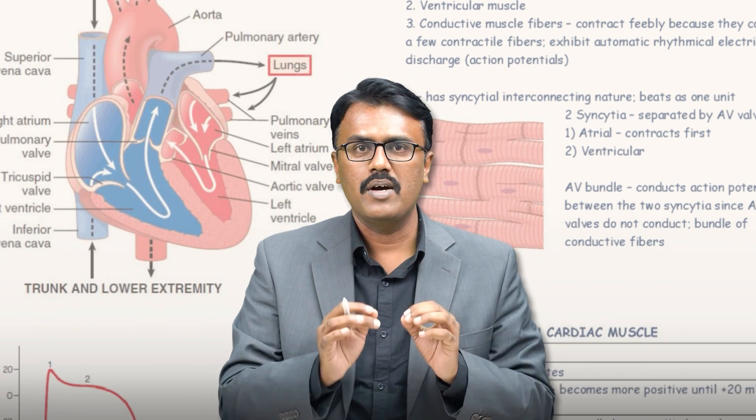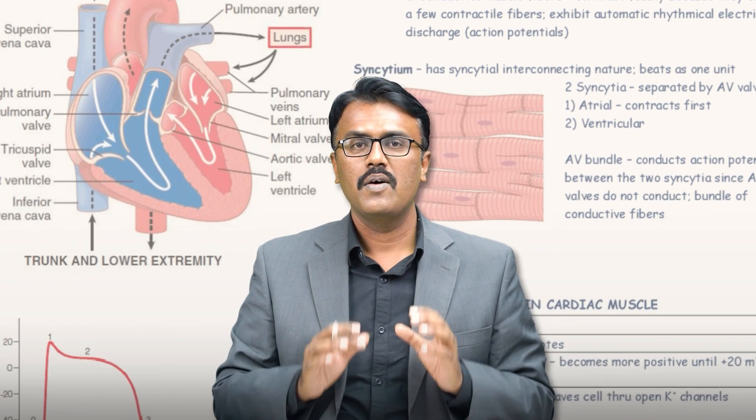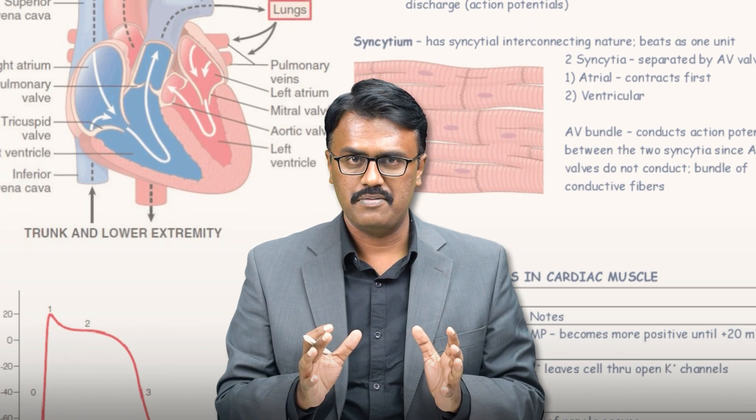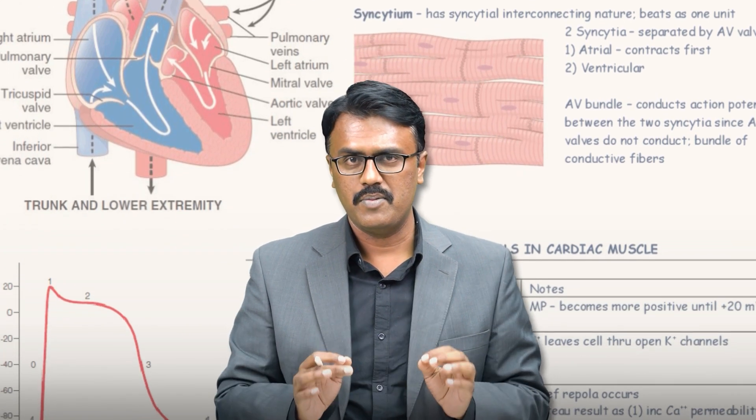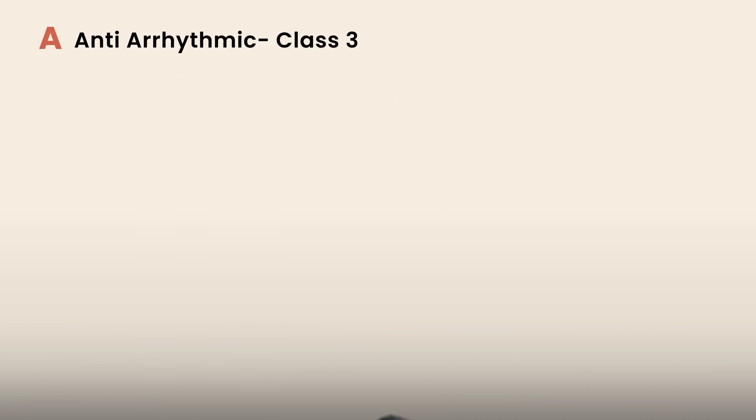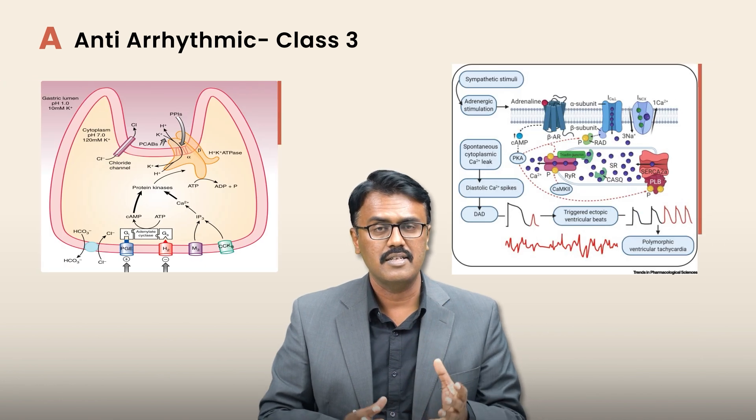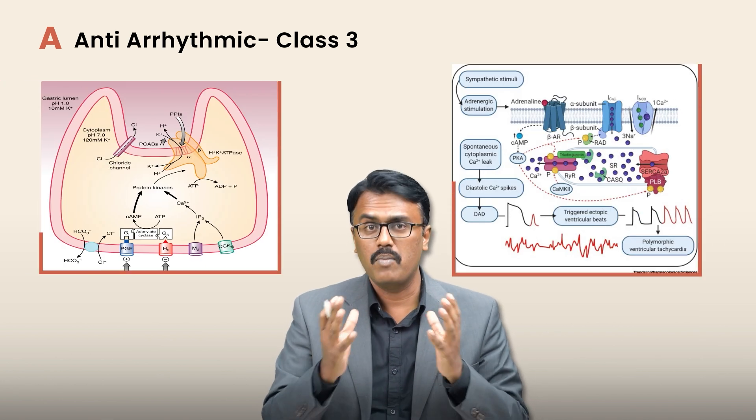I can help you understand the drug using the name itself. The letter A stands for antiarrhythmic drug — it is a class 3 antiarrhythmic. What is class 3? It is a potassium channel blocker.